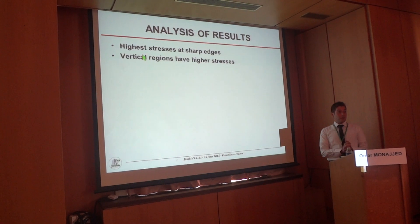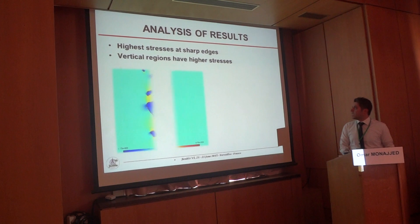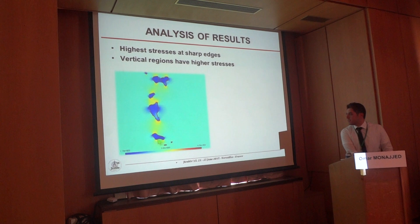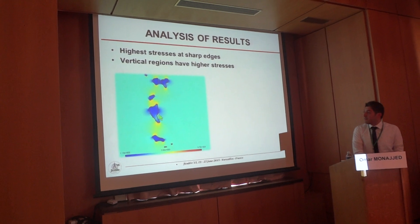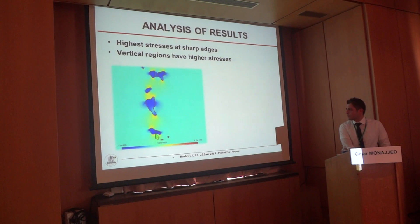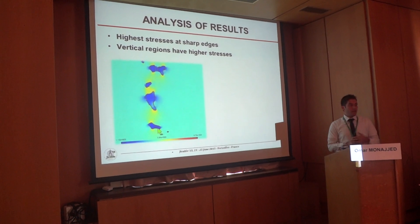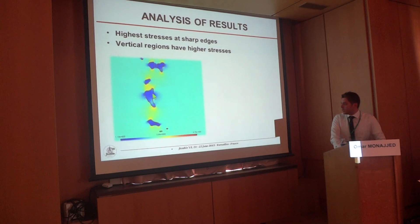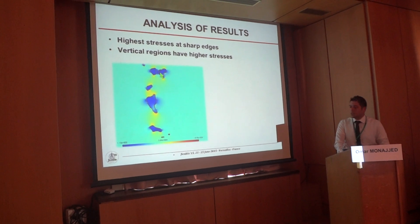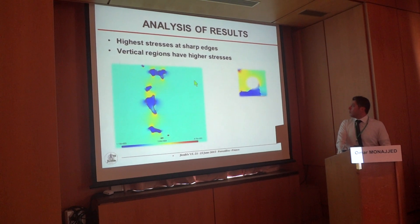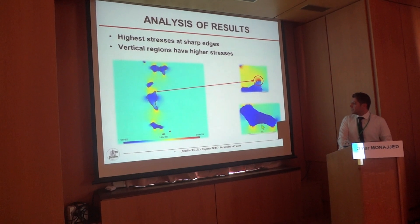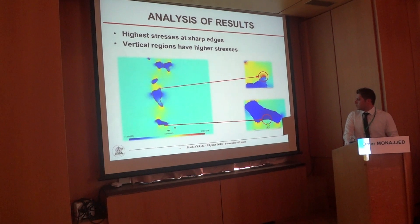Analyzing the results: higher stresses occur at sharp edges. Looking at these sharp edges — 1, 2, 3, 4, 5, 6, and 7 — we see they have much higher stress than the horizontal regions. Also, vertical regions have higher stresses than horizontal regions. Looking at these three vertical regions, they have higher stresses than this horizontal region. This is the area of the highest stress — very sharp. And this is the area of the lowest stress — which is very flat.